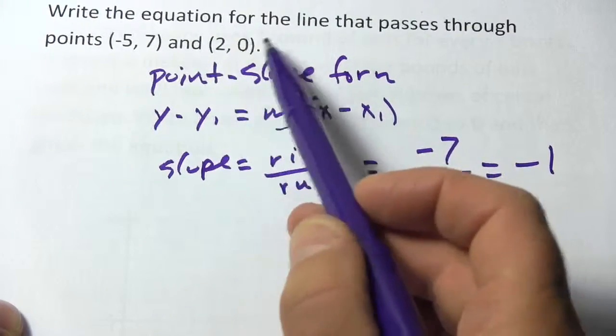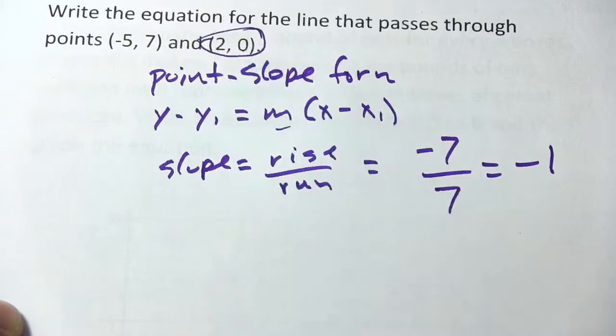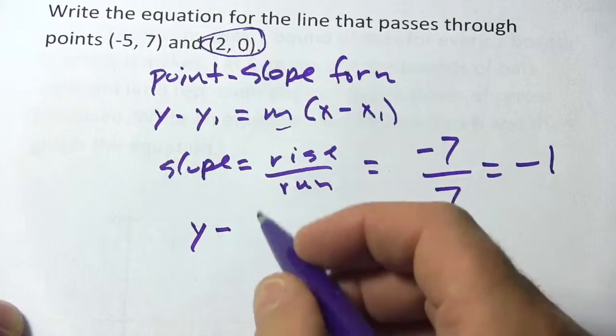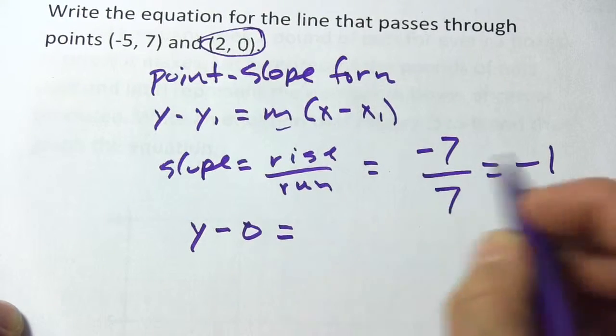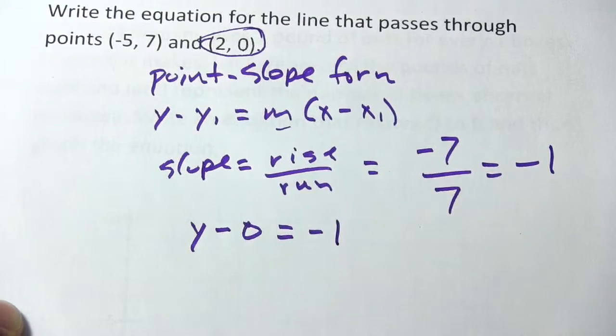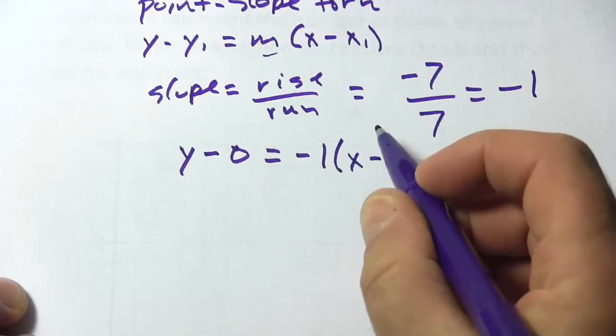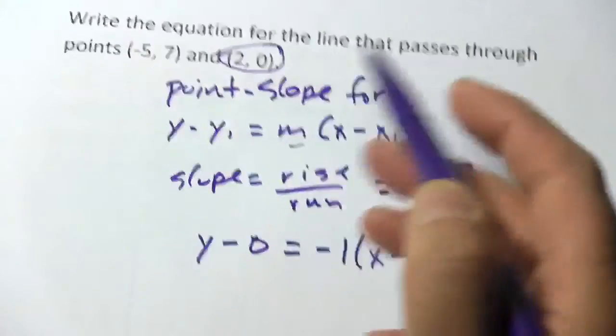And then we are going to choose a point. I think I'm going to choose this point because it looks simpler. So we'll get y minus the y-coordinate, which is 0, that's nice, equals m. That's our negative 1, that's our slope we just figured out. And then times x minus, and that's our x-coordinate of 2.